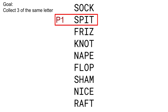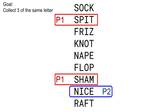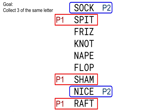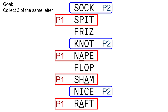For example, player one picks spit, and then player two picks nice. Player one collects two S's by taking sham. Player two then takes sock to prevent player one from collecting that third S. Player one takes raft, threatening to take three T's. Player two counters by taking not, and seems poised to win with three O's, but player one collects three A's by taking nape. Player one wins.